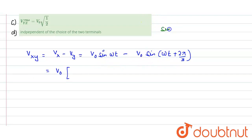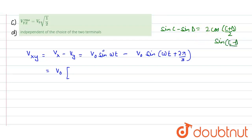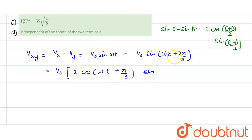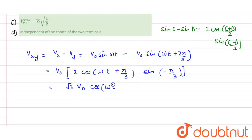The formula is: sin C − sin D = 2 cos((C+D)/2) · sin((C−D)/2). Applying this, we get 2 cos(ωt + π/3) · sin(−π/3). Putting in sin(−π/3) = −√3/2, and multiplying by 2, we get the result as √3·V₀ · cos(ωt + π/3), with a negative sign that can be adjusted by adding π to the phase.